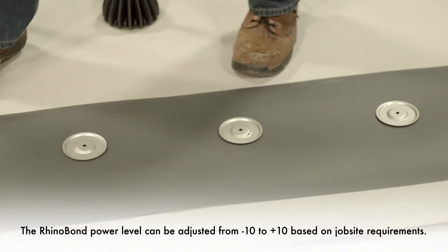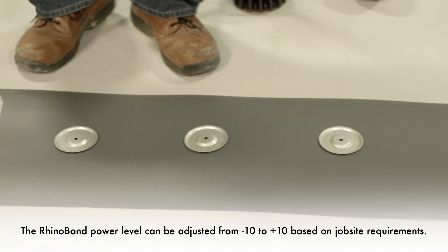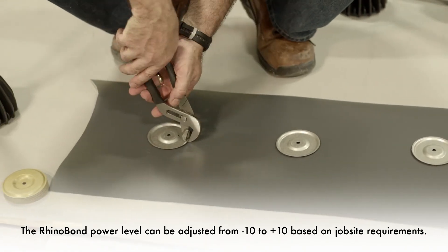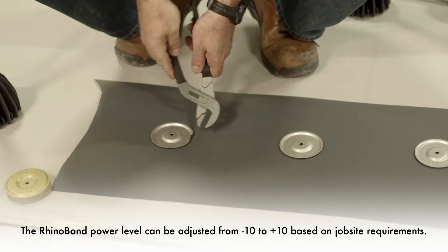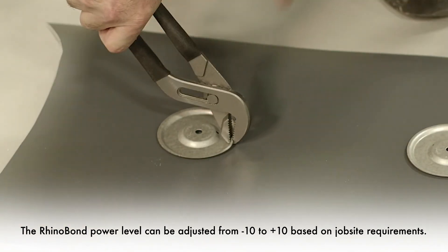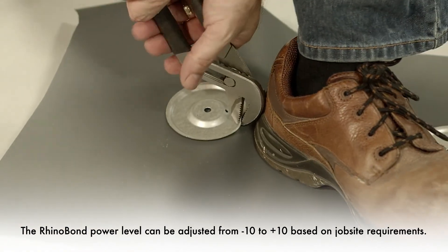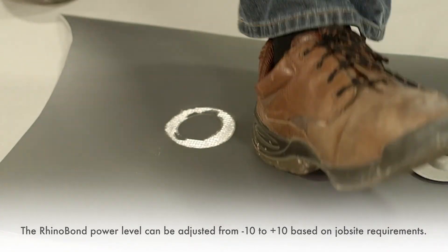Starting with our zero plate, the easiest way to pull a rhino plate is to first bend up a tab to grip with. Once a tab is built, get a good firm grip using your channel locks, put your heel here, and give it a good pull.